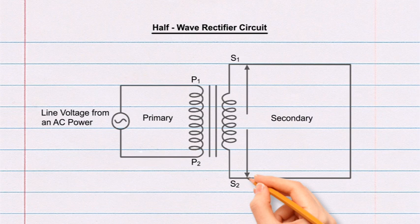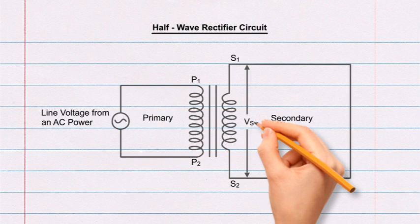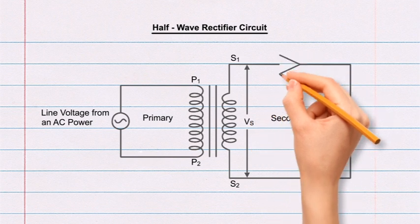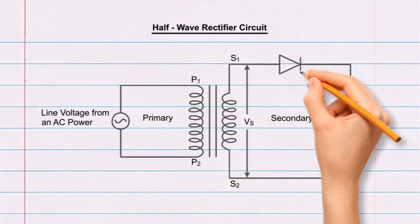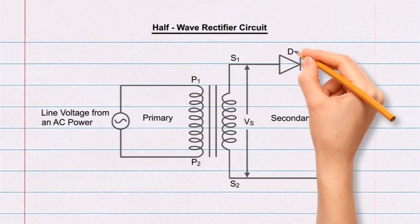At the center of the top horizontal line, draw a triangle tilted towards its right and draw a small line at its tip. This is a diode and mark it as D.